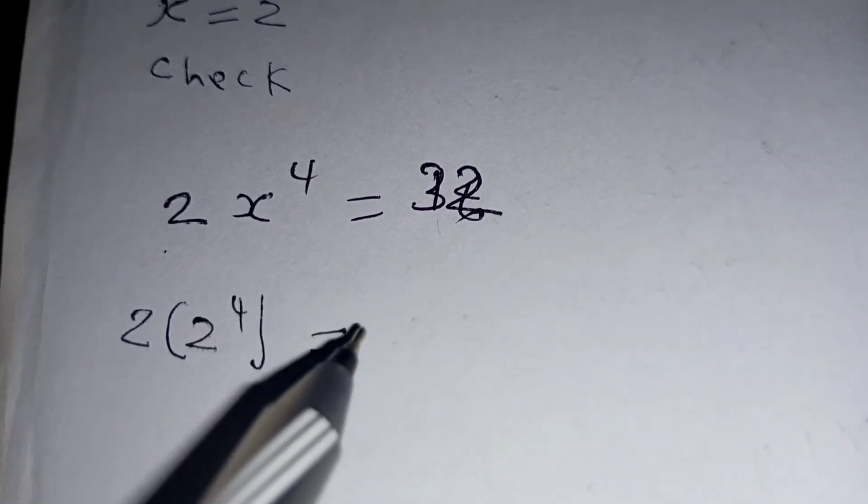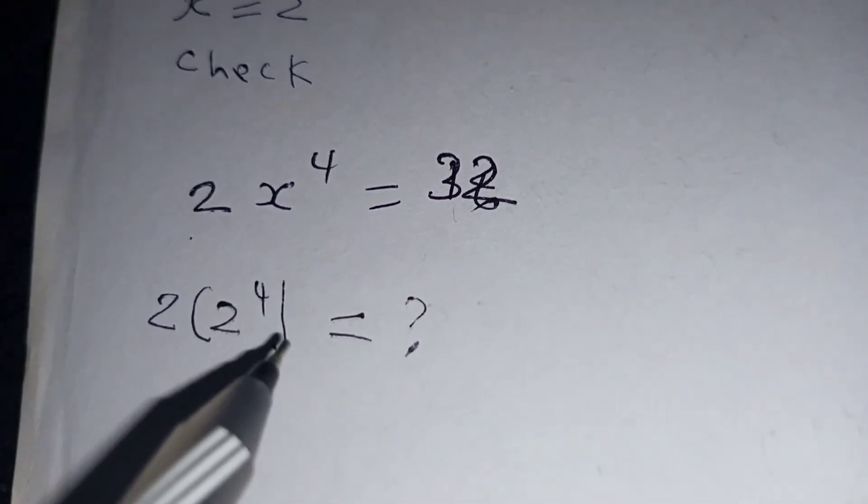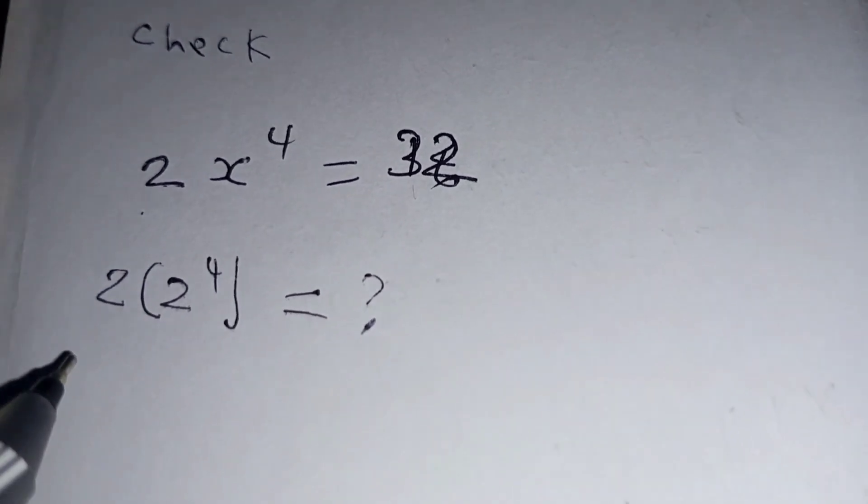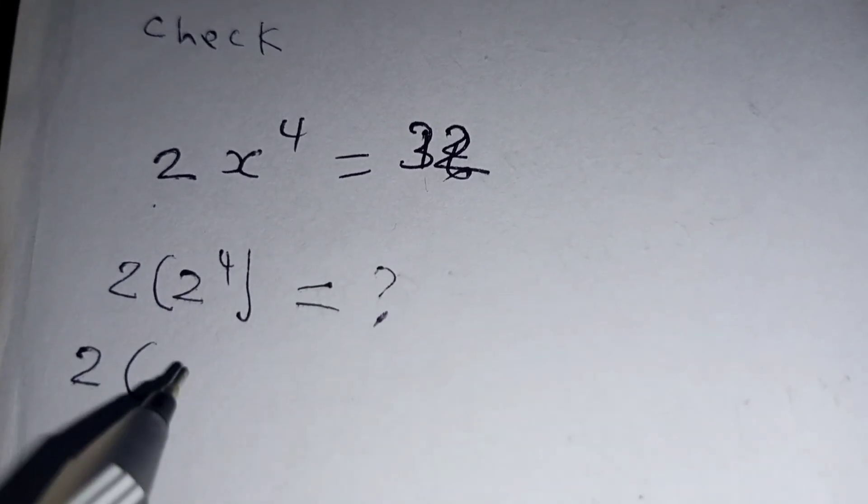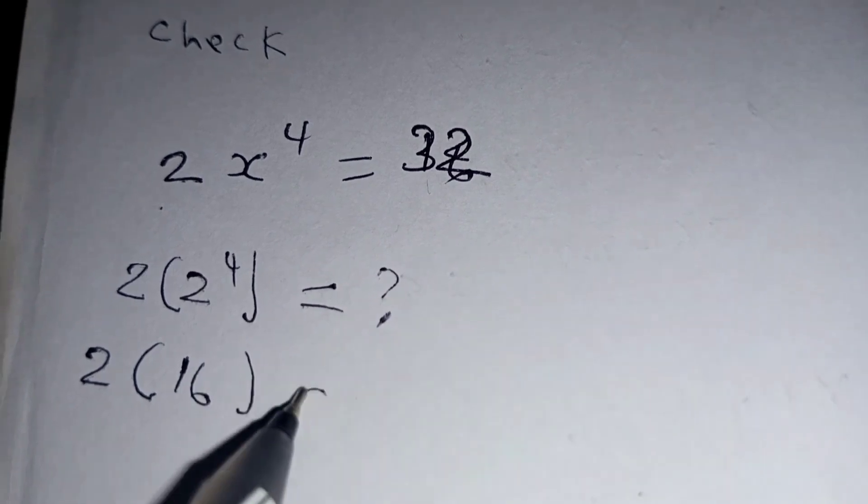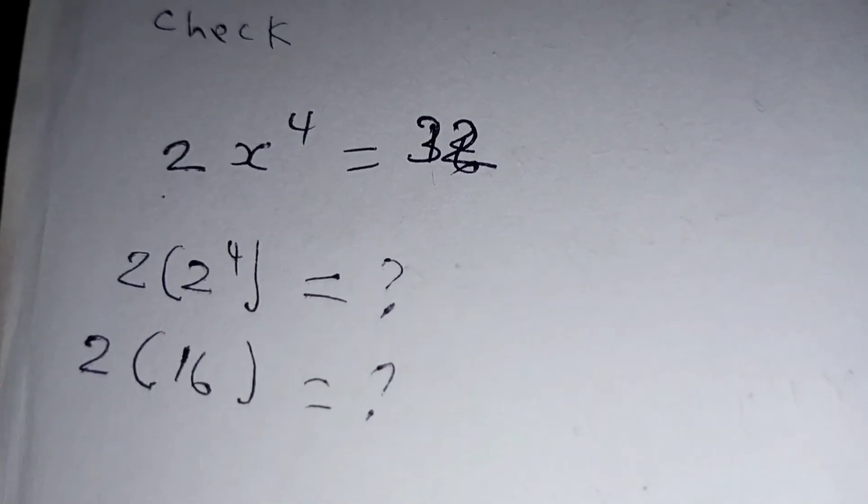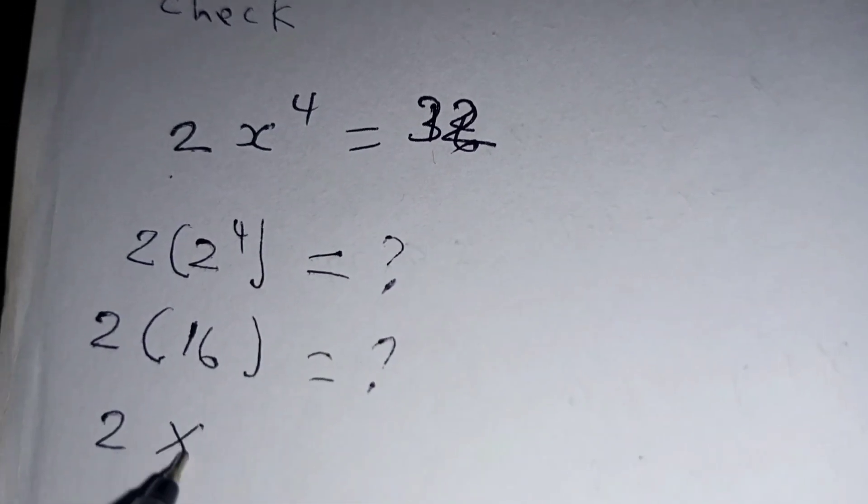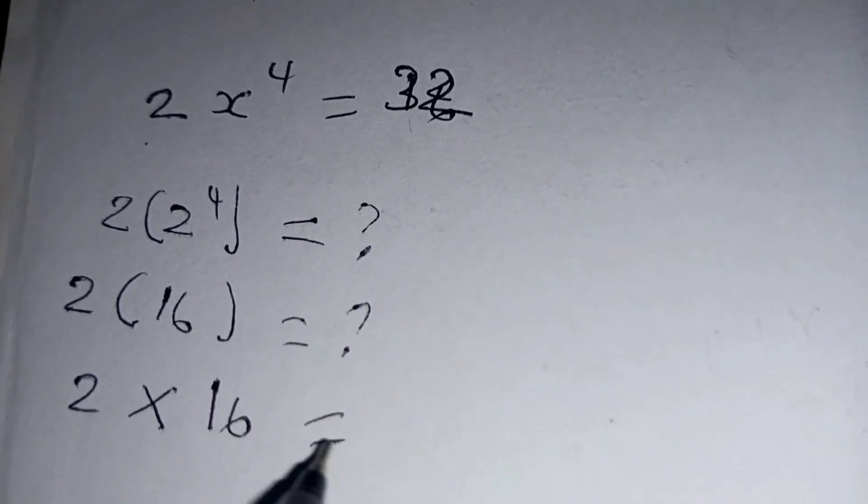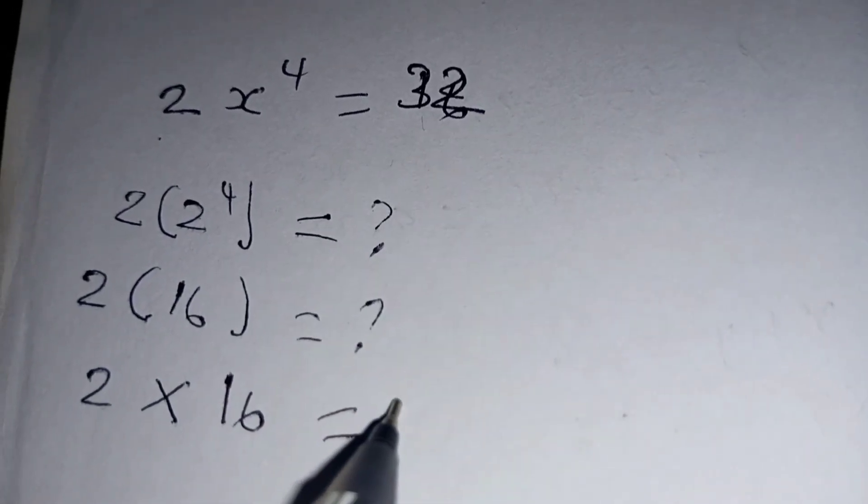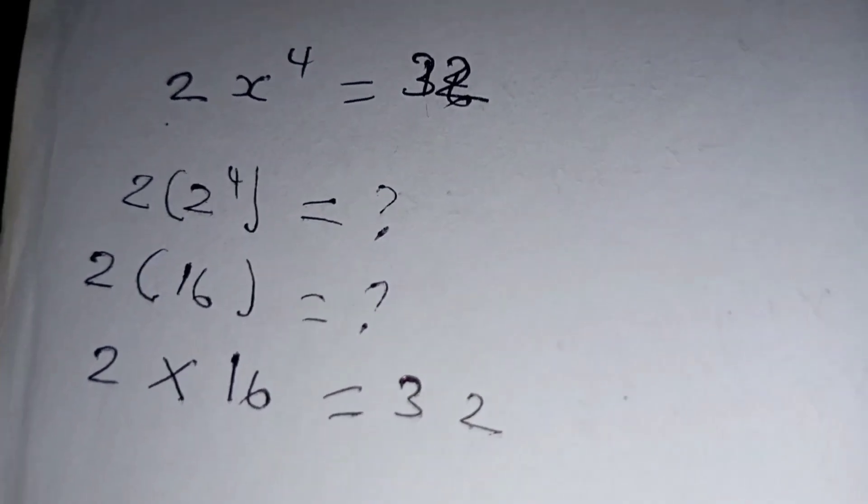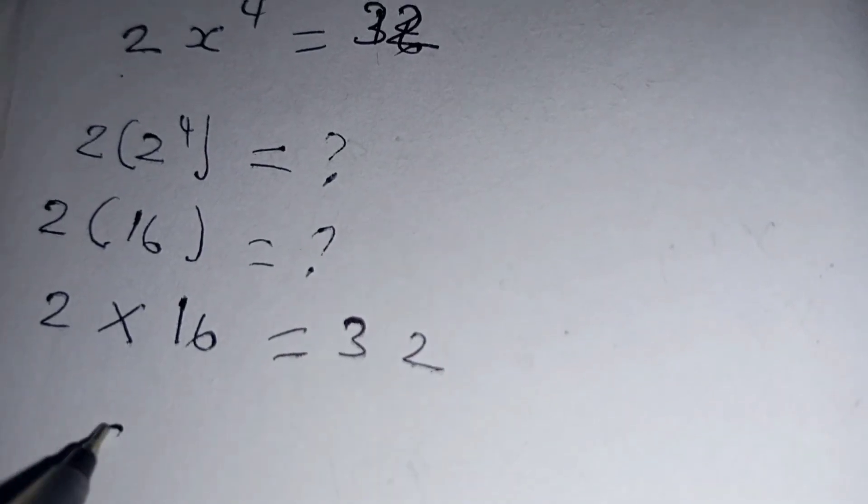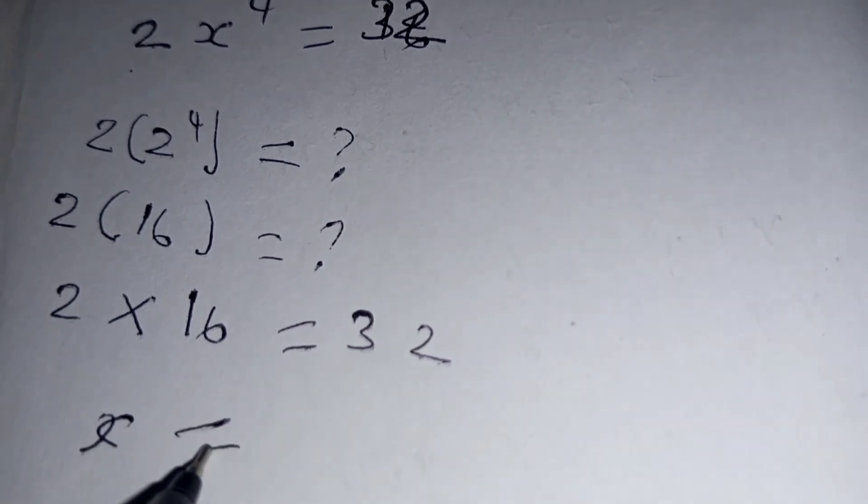Is this one equal to 32? 2^4 is 16. Now 2 times 16 is equal to 32, so clearly our value of x is equal to 2.